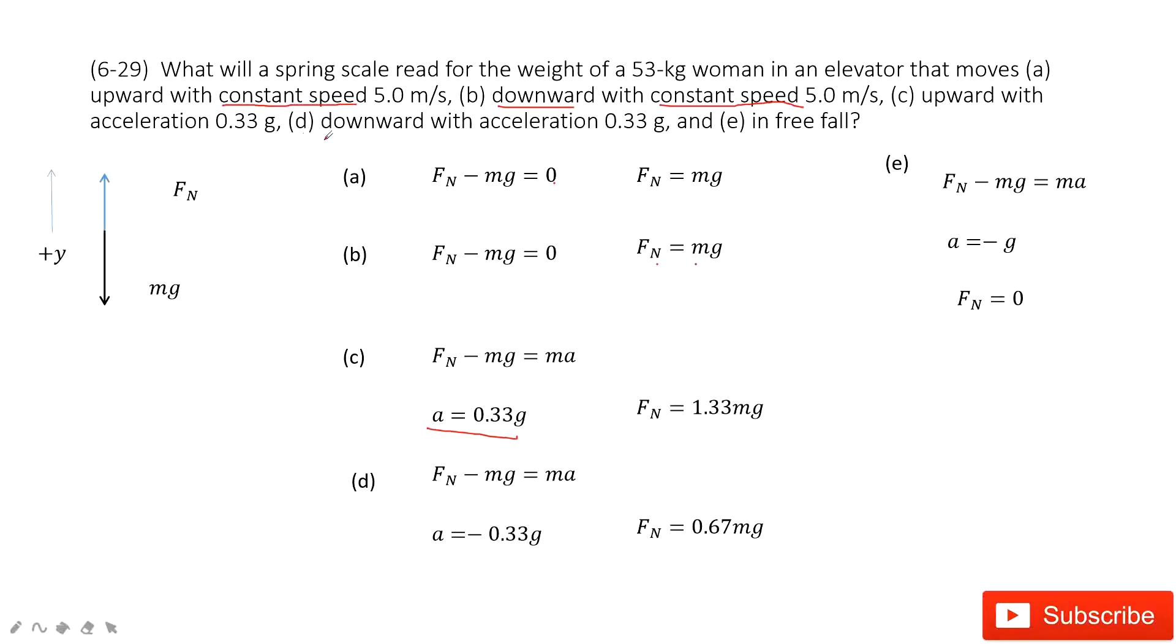The d, this woman moves down with acceleration at the same magnitude. So that means still this acceleration, because it moves down, acceleration is down. So we take the negative sign, because we consider up as positive. So negative 0.33g. Still, we get the normal force equals mass times acceleration. So we input this acceleration, we get the normal force becomes 0.67mg.